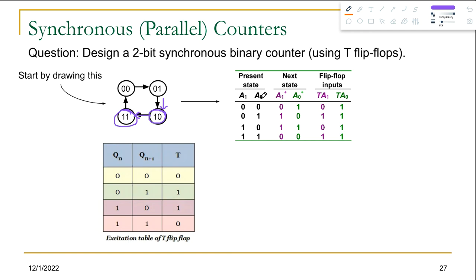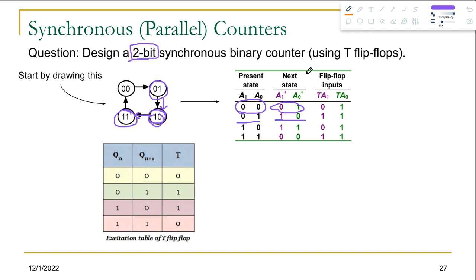In the present state there are two variables, A1 and A0. How do we determine there are two variables? Just look at the number of bits — if the question says two bits then there are two state variables; if three bits, then three variables. You can use any notation like x and y or a and b, but we're using A1 and A0. Just like the diagram, if the present state is 00 then the next state A1+ and A0+ would be 01; if the present state is 01 then the next state would be 10.